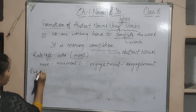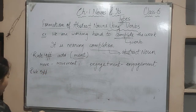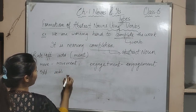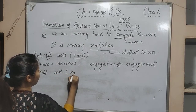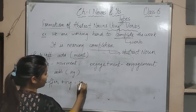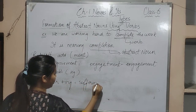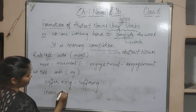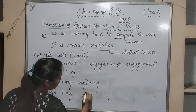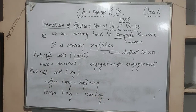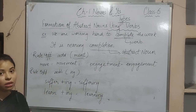Rule number five for verbs: add the suffix -ing. For example, 'suffer' is a verb — suffer + ing = 'suffering,' which is an abstract noun. Similarly, 'learn' is a verb — learn + ing = 'learning,' which is an abstract noun. Those were all the rules for formation of abstract noun using verbs.